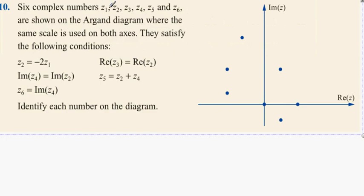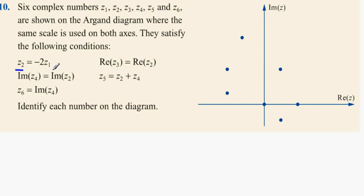Now to question 10. Six complex numbers Z1, Z2, Z3, Z4, Z5, Z6 are shown on the Argand diagram, where the same scale is used on both axes. They satisfy the following conditions: Z2 equals negative 2 times Z1. So what we're looking for is that if we had a complex number Z1, for instance, which looks like this...